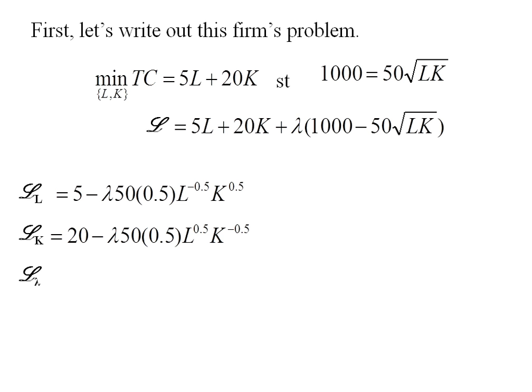Similarly, I'll partially differentiate with respect to capital, and when I partially differentiate with respect to lambda, I get back the constraint. I'll set each of these equal to zero, and then work with the top two equations first.